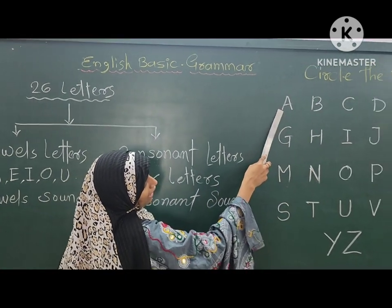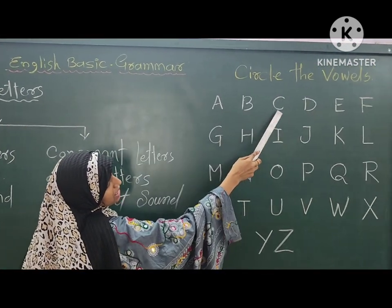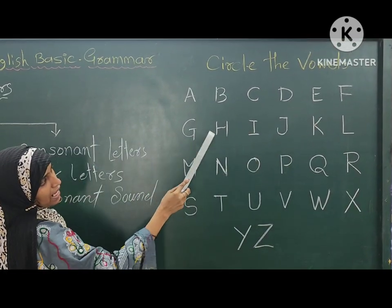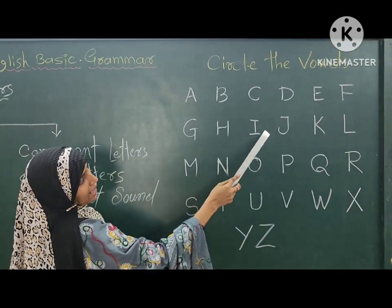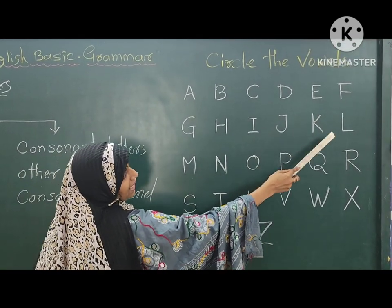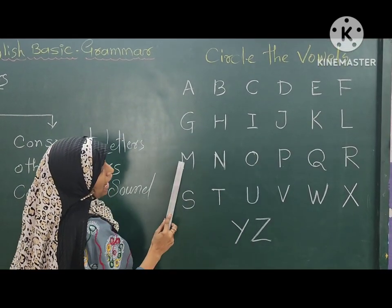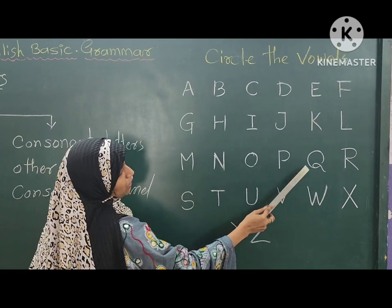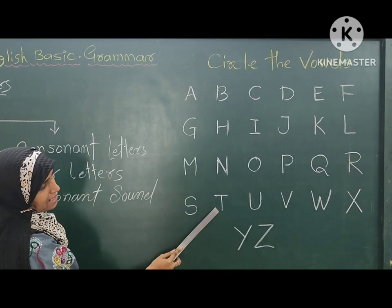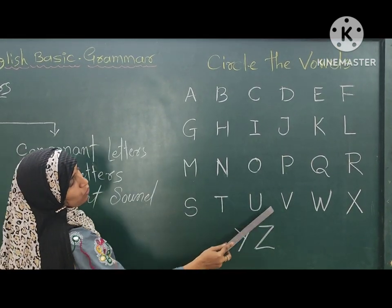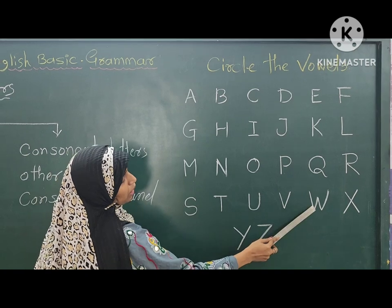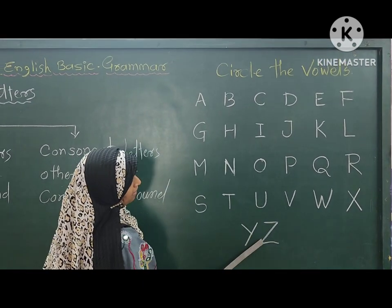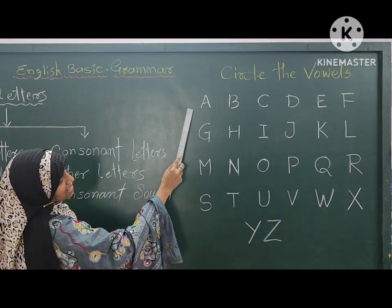In English, the 26 letters are: A, B, C, D, E, F, G, H, I, J, K, L, N, O, P, Q, R, S, T, U, V, W, X, Y, Z. In the first line we have A, B, C, D, E, F.